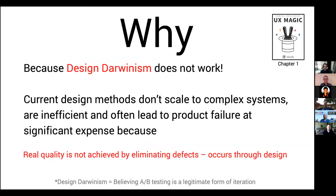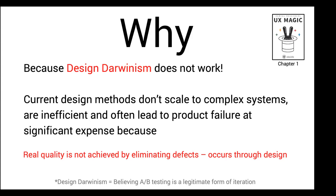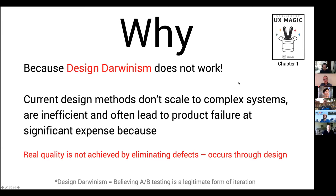Another reason this is important is that design Darwinism simply doesn't work. Design Darwinism — to define my terms carefully — is believing that A-B testing is a legitimate form of iteration, when it's absolutely not. You can't build a medical system this way. You can't build a large enterprise system this way. You don't trial and error to see how many patients die. And in general, if all you're doing is A-B testing, you would get to a local maxima, but you never really get to the best design, because quality is not about eliminating defects. Quality has to be structural from the beginning.